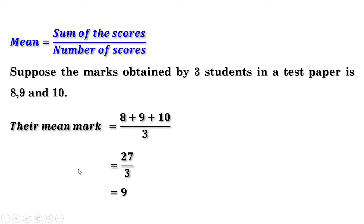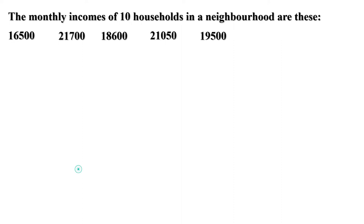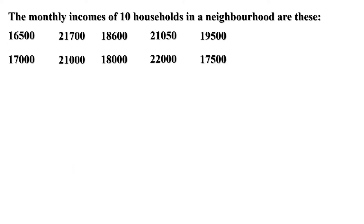The mean mark is 9. Now let us take another example. The monthly incomes of 10 households in a neighborhood are: 16,500; 21,700; 18,600; 21,050; 19,500; 17,000; 21,000; 18,000; 22,000; and 17,500. What is the mean monthly income?